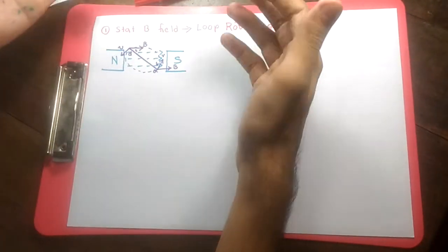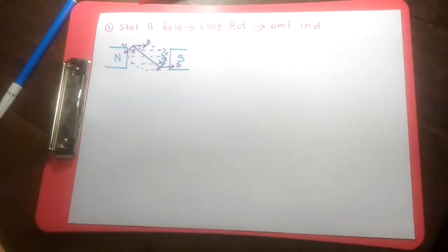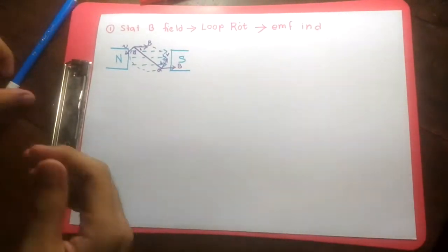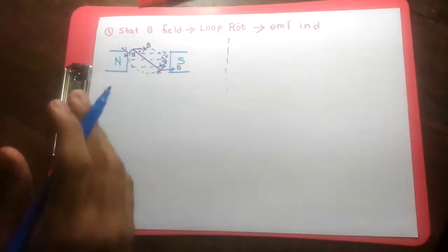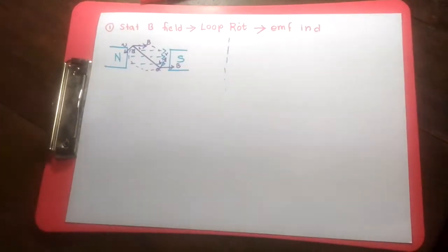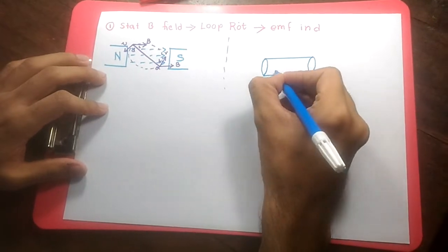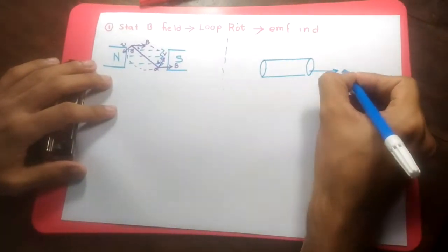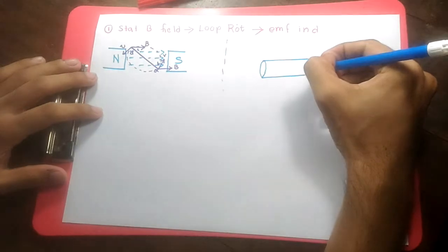The first point of interest is how a rotating loop behaves in a stationary magnetic field, and we will arrive at the result that an EMF is induced in the rotating loop. Before going to the loop, we need to understand how a moving wire behaves in a stationary magnetic field. Suppose this is a moving wire — there are charges in it, its velocity is in this direction, and a stationary magnetic field is pointing into the page, which I will denote by this vector.